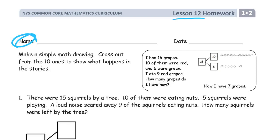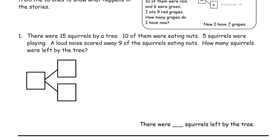Here's an example of how we're crossing out from the ten. There were fifteen squirrels in a tree. Ten of them were eating nuts. Five squirrels were playing. A loud noise scared away nine of the squirrels eating nuts. How many squirrels were left by the tree?